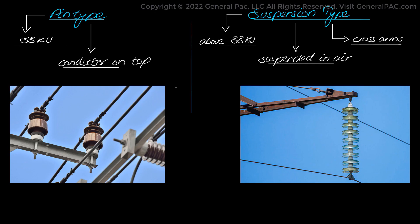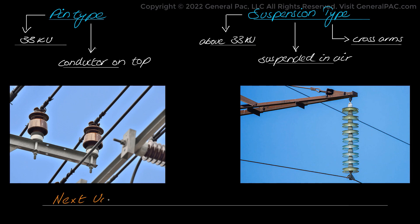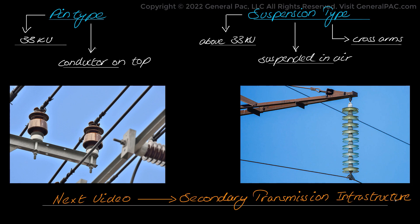Lightning is also a serious problem for transmission lines and can potentially damage equipment due to surges and voltage fluctuations it causes. Therefore, lightning arrestors are installed on transmission lines and towers, while ground wires are connected to the towers. In the next video we will be discussing secondary transmission infrastructure and talk about concepts related to the distribution side of the electrical power system.